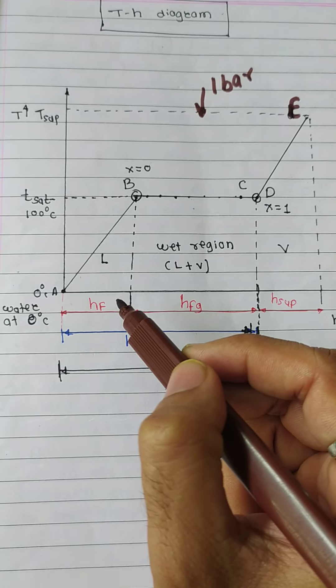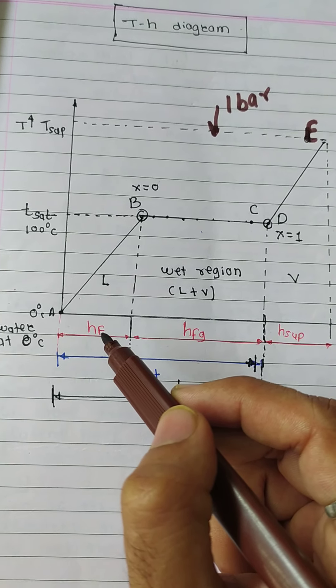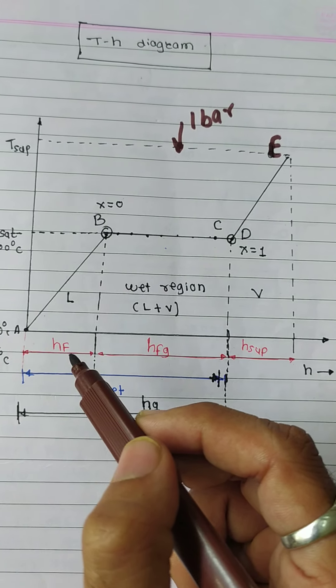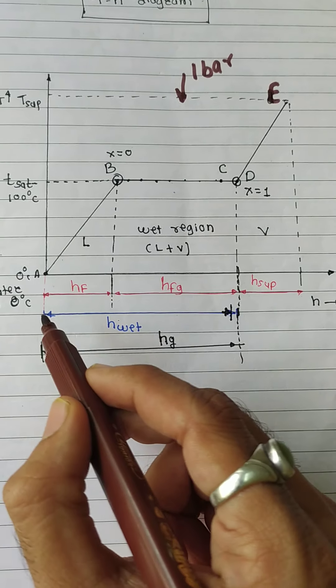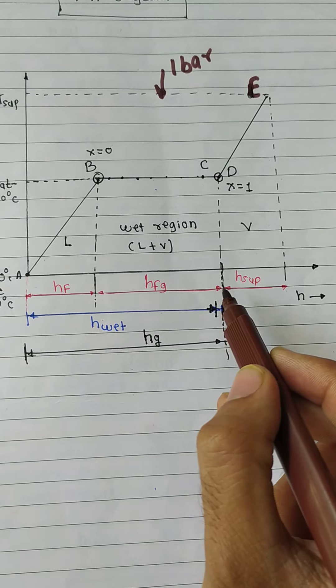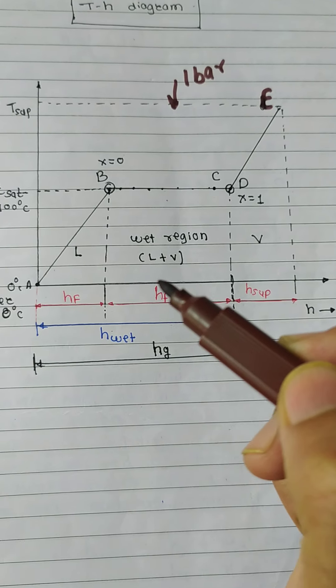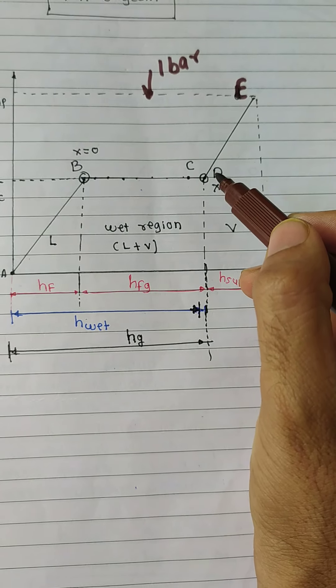We calculate the enthalpy property when water is initially in single phase, studying all properties for 1 kg of water. This is the sensible heat of water, or specific enthalpy of water. At point D, the steam is completely dry, so it is denoted as HG — specific enthalpy of dry steam. For reaching point D, we need to supply two kinds of heat: first HF and then HFG. So the heat added is HF plus HFG, and then we achieve the state of enthalpy of dry steam.